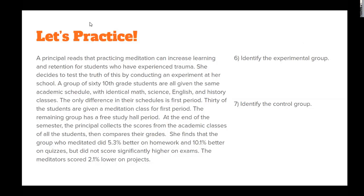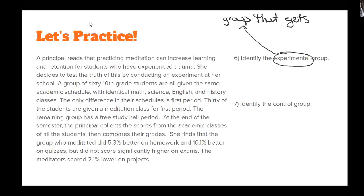Your experiment will have an experimental group and a control group. What did we say the experimental group was? Because number six asks us to identify the experimental group. That's the group that gets the independent variable. In this case, the ones getting the independent variable are the students in the meditation class.